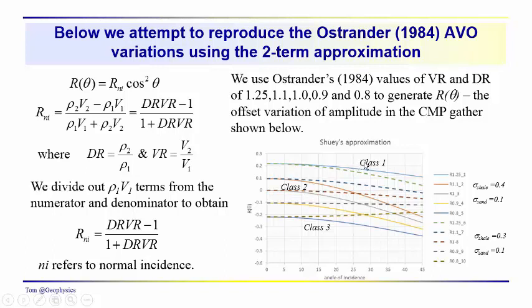We're looking at the traces in a common midpoint gather, which vary from near zero offset to some maximum offset. We've got class 1, a positive reflection coefficient decreasing. Class 2, starting off near zero and decreasing into the negative. And then your class 3 anomalies that we see here with a negative reflection coefficient becoming increasingly negative. This would be the result of Shuey's approximation here.